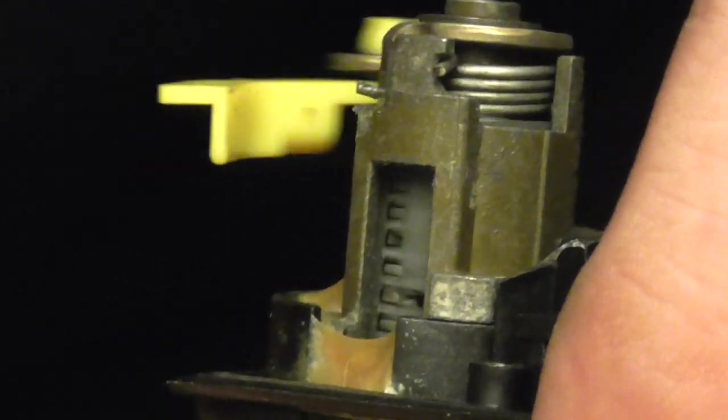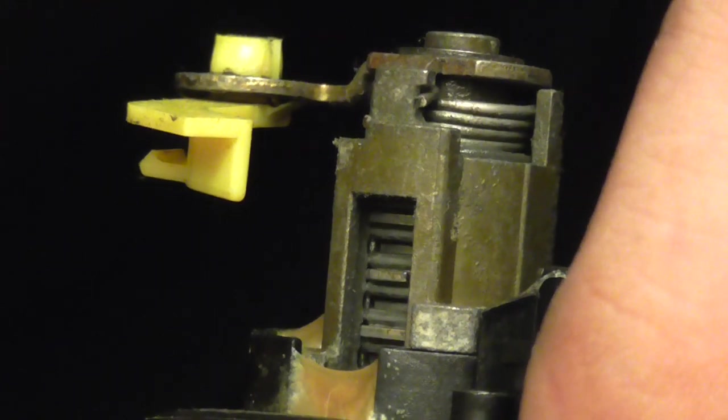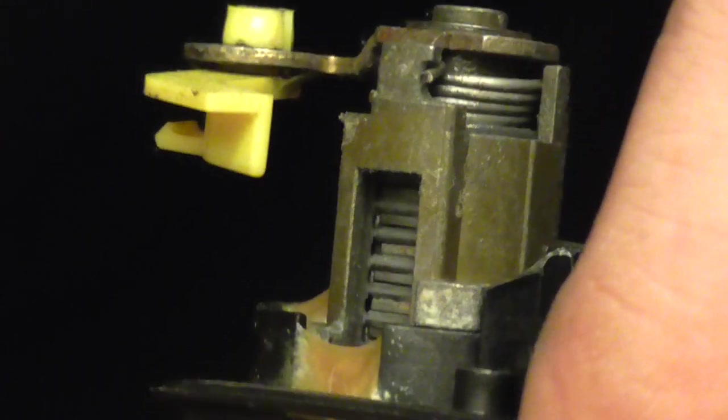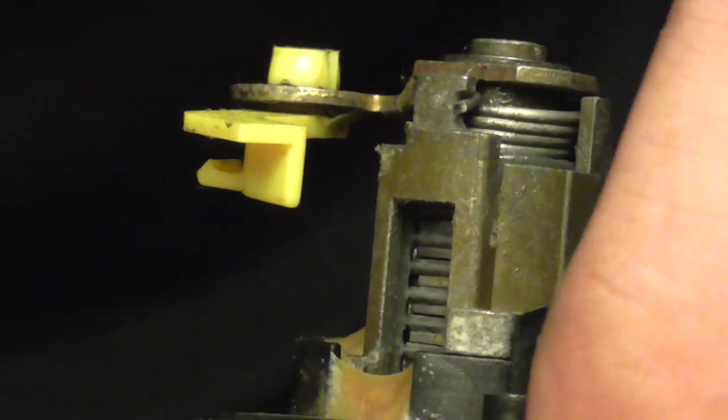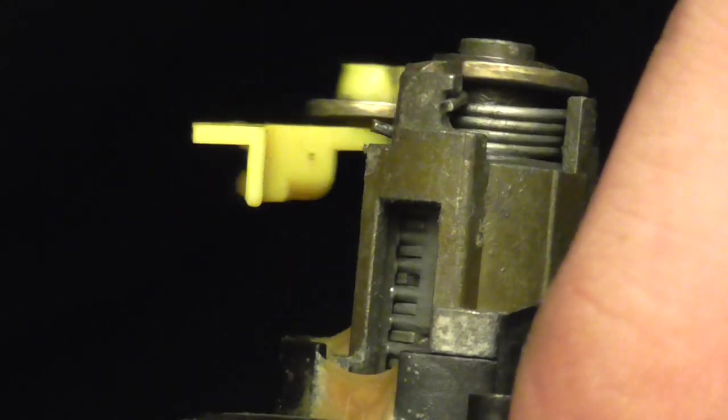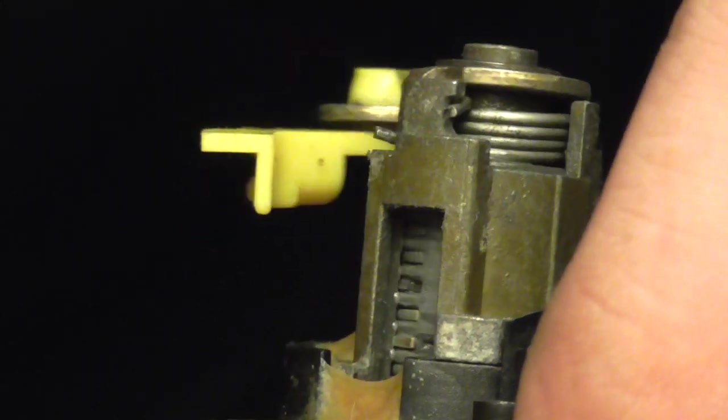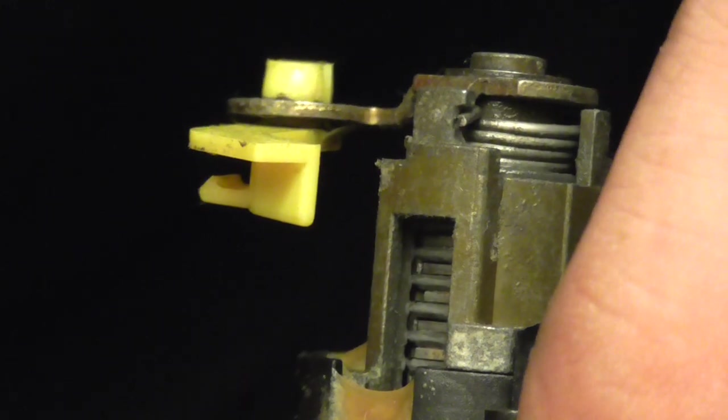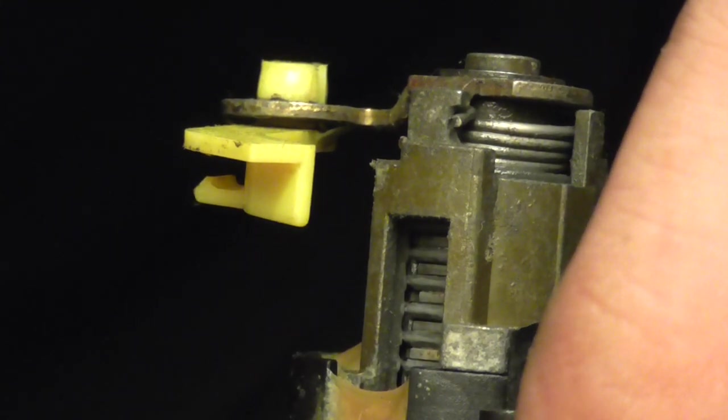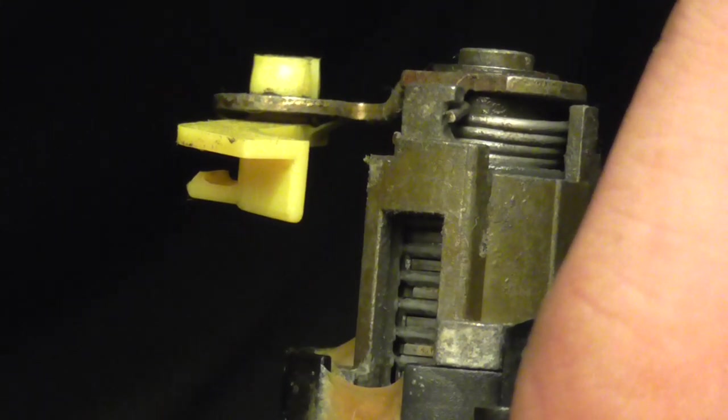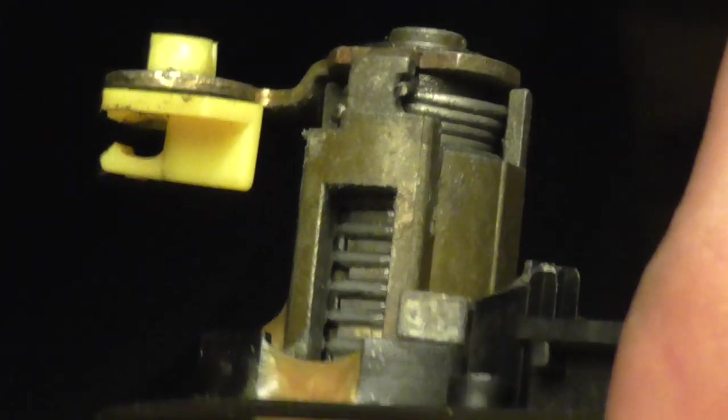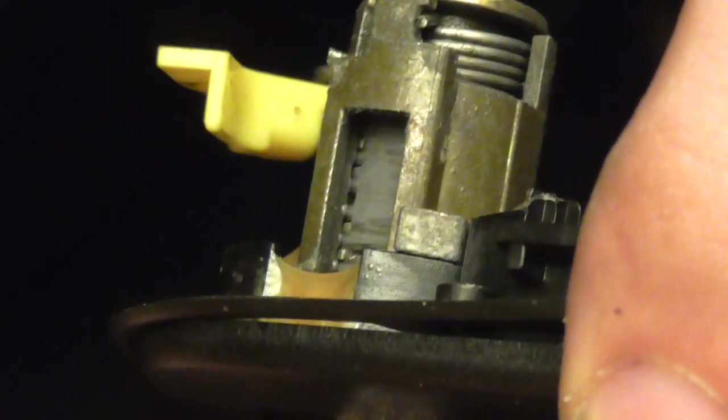And this is also why it's important to lubricate the lock assembly, especially in the winter times, because you can see this is just twisting inside a barrel there, twisting inside a cylinder here. If ice or water gets in there that will freeze up, so we use WD-40 or some kind of lock oil.